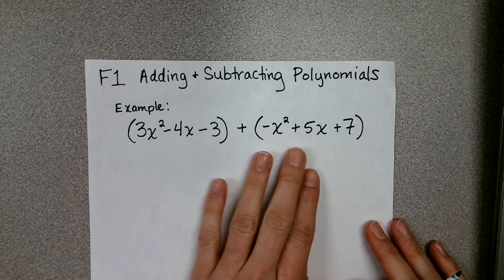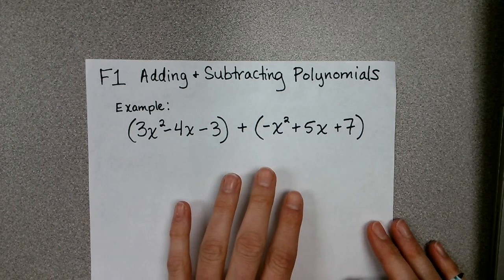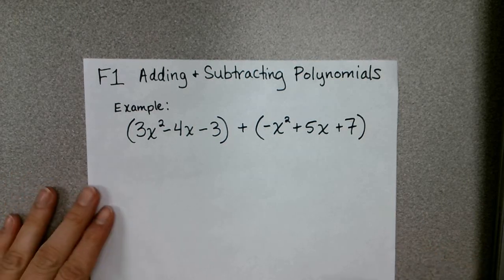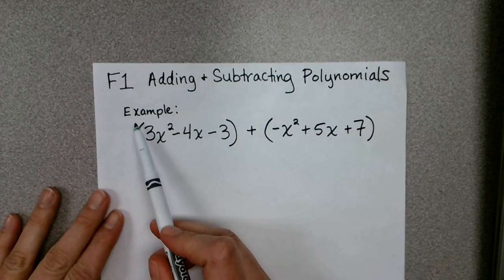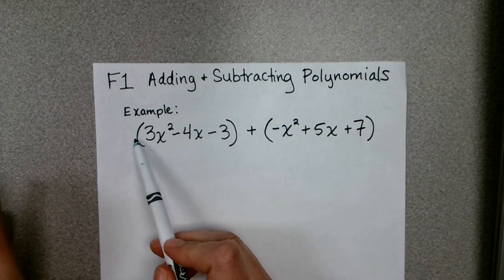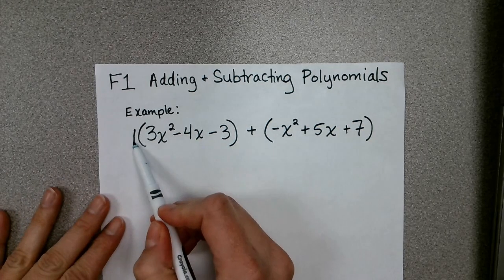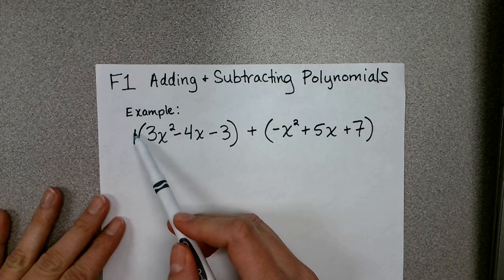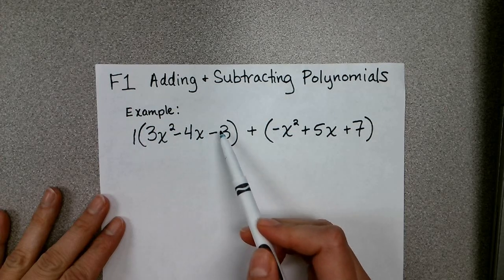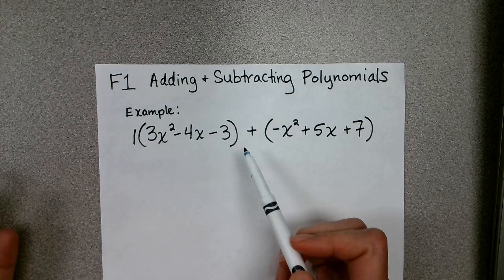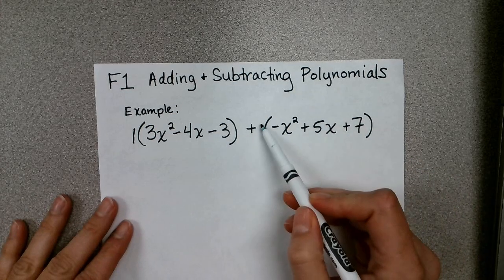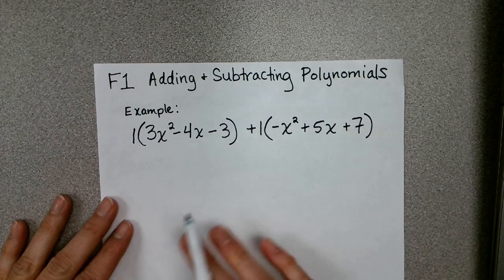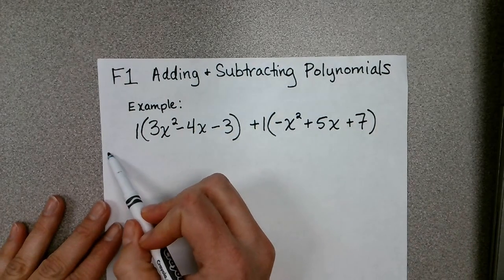Sometimes students get confused with the parentheses being around here. Please note that you can drop parentheses if there is nothing in front of the quantity. Now technically there is a 1 here, so if you think of distributing 1 and multiplying each term by 1, you're of course going to get the same set of terms. Likewise over here, there's just a 1 in front; multiply that in, you get the same terms.